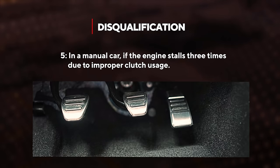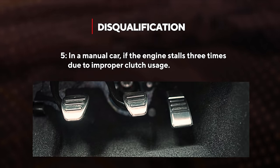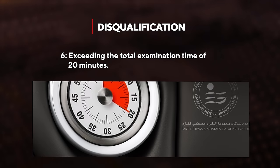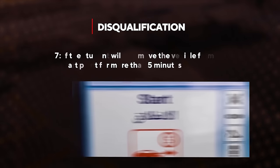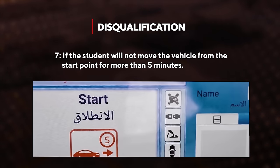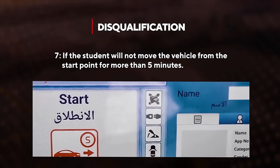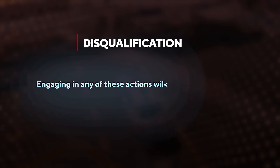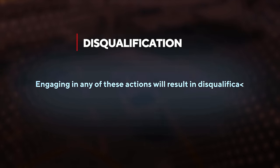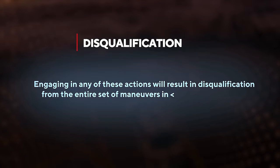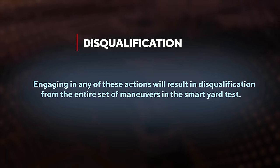Number five, in a manual car if the engine stalls three times due to improper clutch usage. Number six, exceeding the total examination time of 20 minutes. Number seven, if the student does not move the vehicle from the start point for more than five minutes. Engaging in any of these actions will result in disqualification from the entire set of maneuvers and the Smart Yard test.